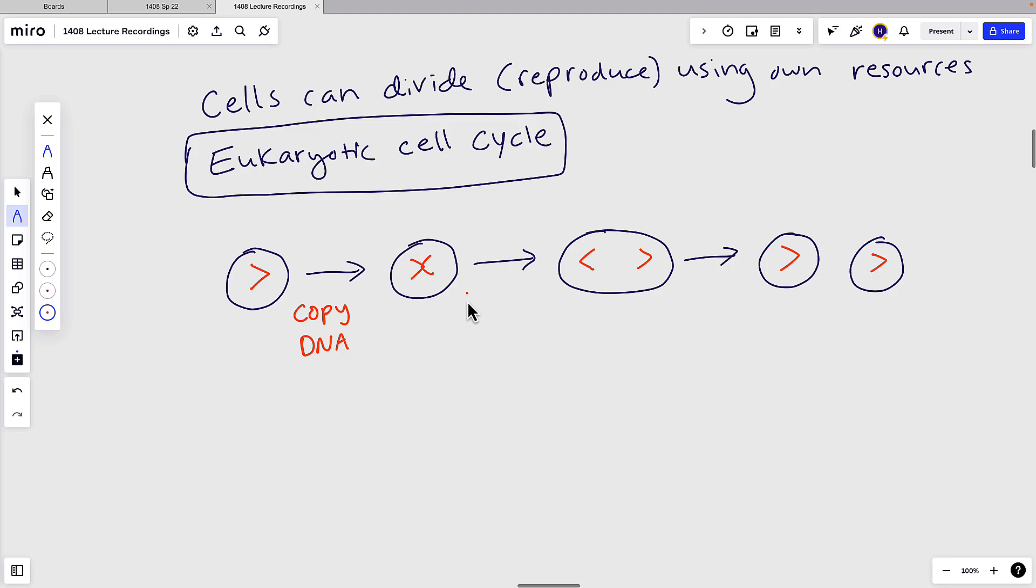We divide the DNA, or for eukaryotic cells, this is going to be the nucleus that contains the DNA. Then we're going to divide the cell or the cytoplasm and end up with two new cells.